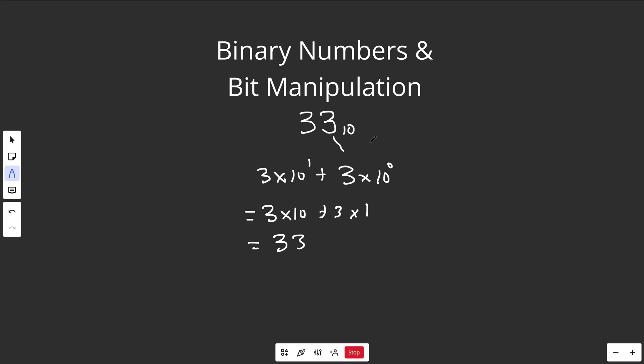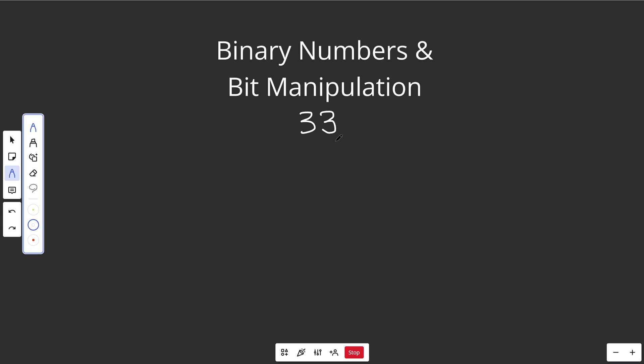But we don't have to use base 10. You could represent 33 in any base — say base 2, which is binary, or base 16, which is hexadecimal. There are tons of different bases you could use. Let me show you how you can take 33 in base 10 and convert it to binary.